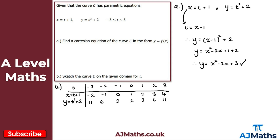That gives us our table of values. Now the Cartesian equation we found is just a quadratic, so we could sketch it directly — but let's use the table method since you'll need it for the next question. Sketching the axes: x values go from minus 2 to 4, and y values go from 2 up to 11. Let's plot the points.